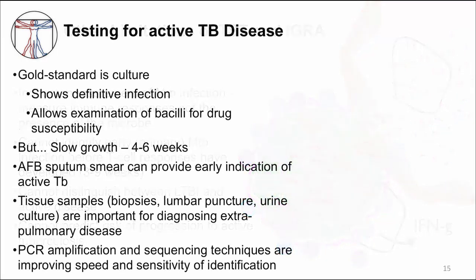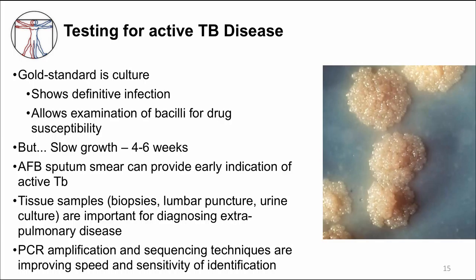So how do we definitively diagnose active TB disease? The gold standard is culture — this is the only way to show definitive infection and the only way to obtain drug susceptibility. When you are diagnosing active TB disease, you need to obtain cultures. But growth in cultures is very slow and takes four to six weeks. Here is a close-up picture of MTB colonies growing on an agar after many weeks of incubation. Sputum smear positive for AFB stain can provide early indication of active TB disease, but not all patients have this. Tissue sampling from tissue biopsies, lumbar puncture, and urine culture are important for diagnosing extra-pulmonary disease. PCR amplification and sequencing techniques have improved speed and sensitivity of identification, and give quicker drug susceptibility results.